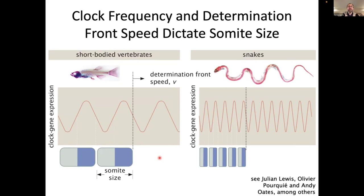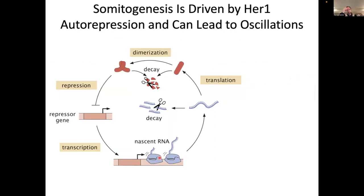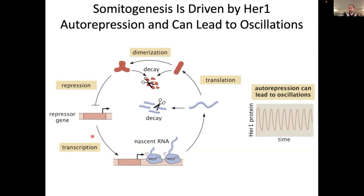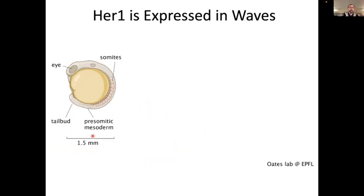What I want to focus on today is the oscillations themselves. What people figured out is that these oscillations are driven by a repressor called HER1 — probably one of the only protein names I'm going to mention today. The idea is that HER1 dimerizes with itself, then represses itself, so you get this negative feedback loop. We know that under a certain parameter regime, negative feedback loops can support oscillations.